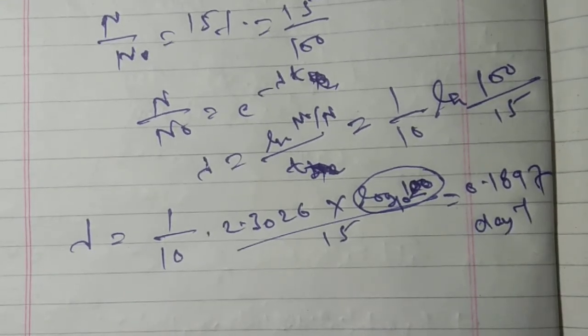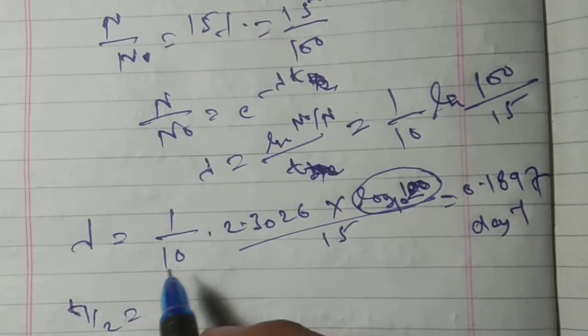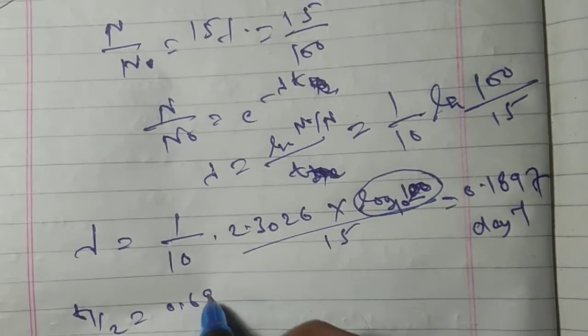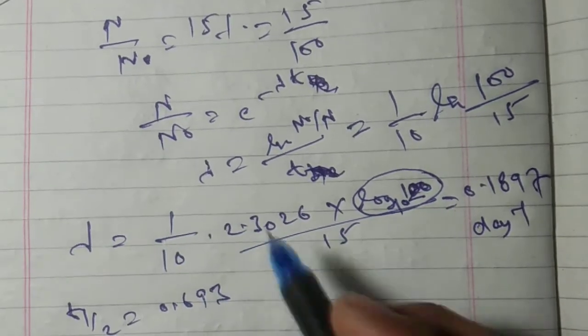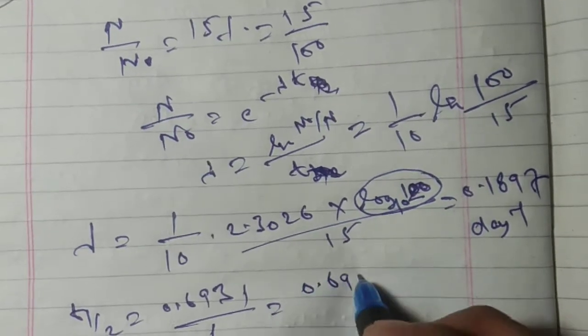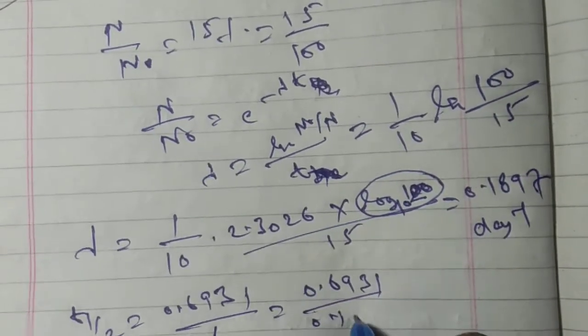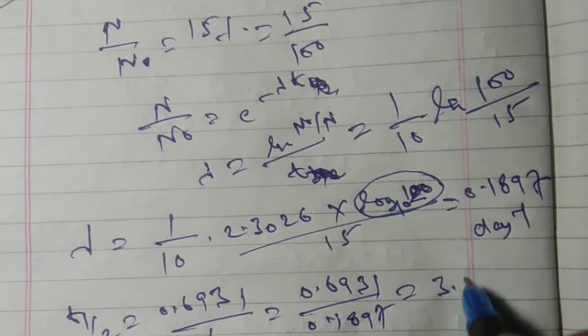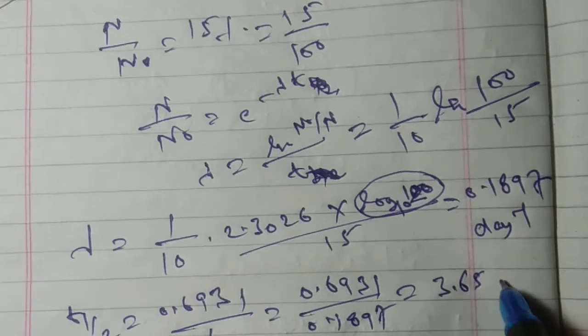This is the value of the decay constant. We know that the relation between decay constant and t half is t half equals 0.693 upon lambda. So 0.6931 upon 0.1897 is equal to 3.65 days.